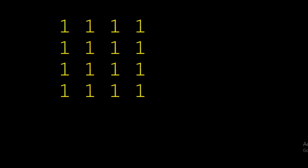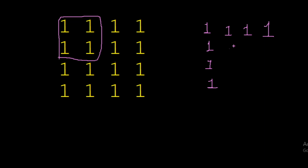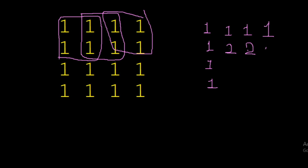Let's look at another example to make things clearer. For the side elements — the first row and first column — we place them as-is. For an interior element, we check the square formed by its left, above, and diagonal neighbors. If all are one, this element becomes two, meaning it contributes squares of both size one and size two.